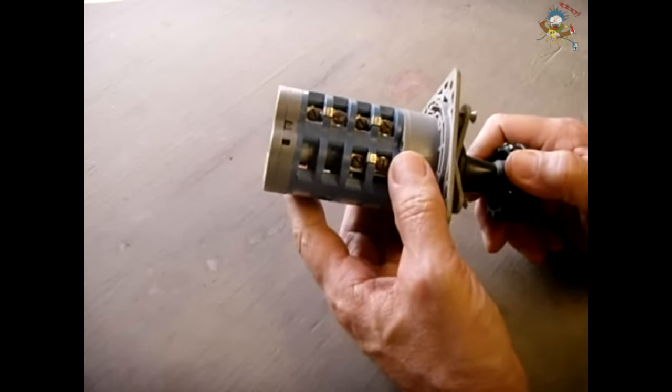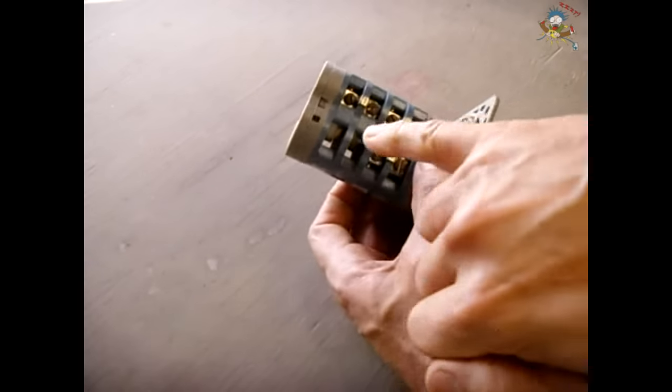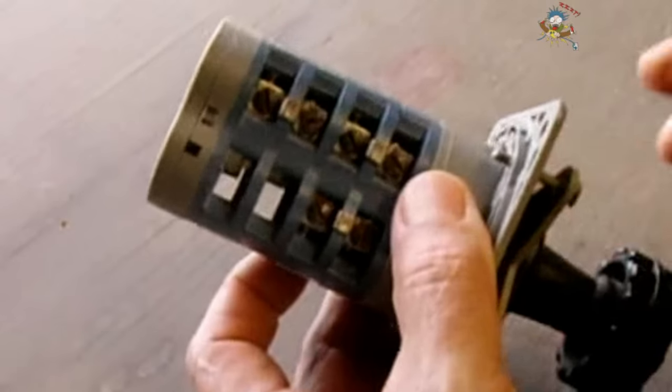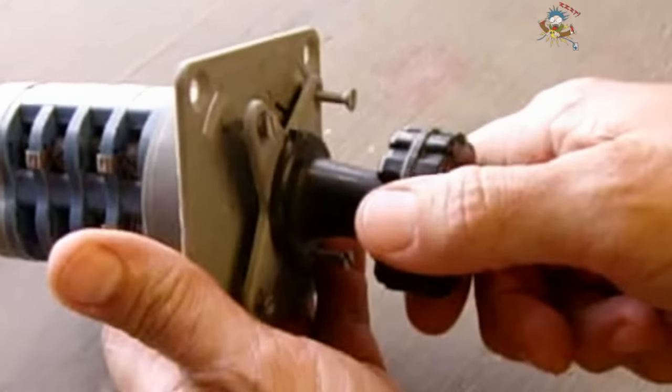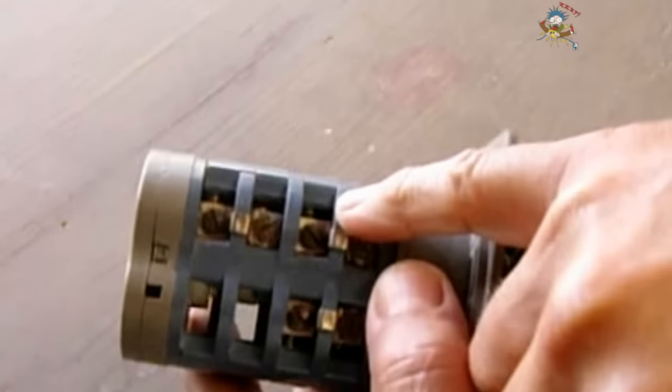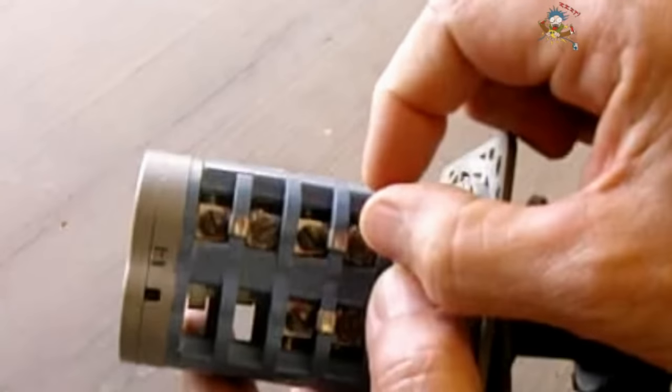This is a cam lobe switch. You can see right in here that plastic lobe. As you rotate the handle, the lobe moves into different positions, and as it does, you have these contacts just like you have on a relay, and they open and close.